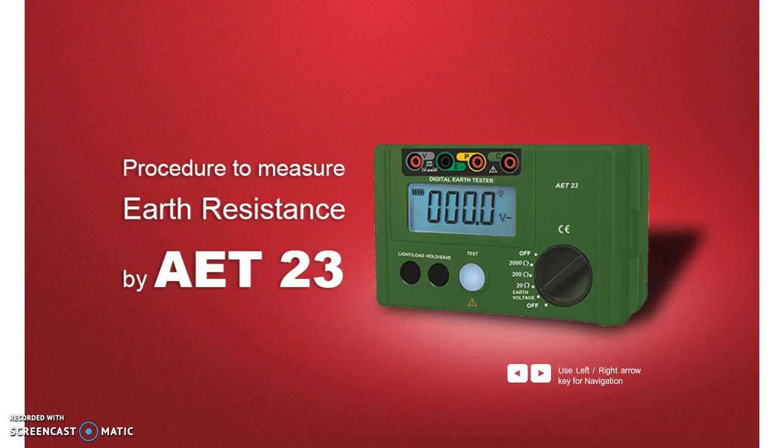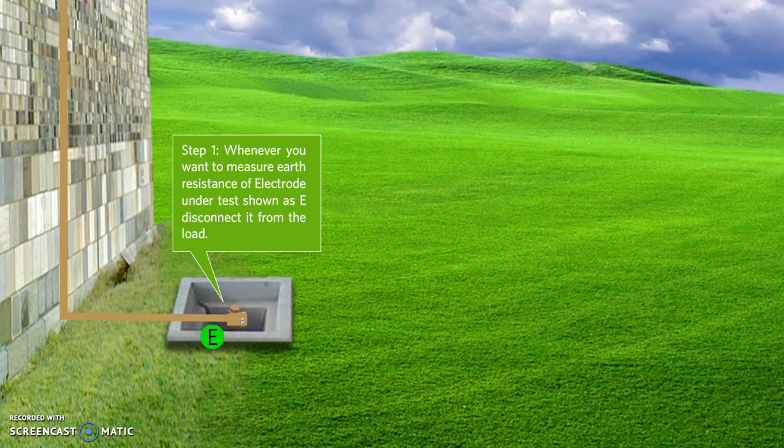Now we will see the procedure to measure the earth resistance with the help of Agam AET23. The most important precaution to be taken before starting the earth resistance test is to disconnect the electrode under test with the load. Only then we can get the actual value of resistance.